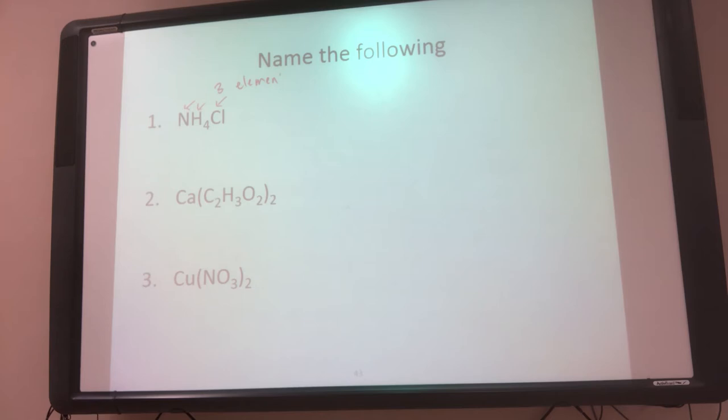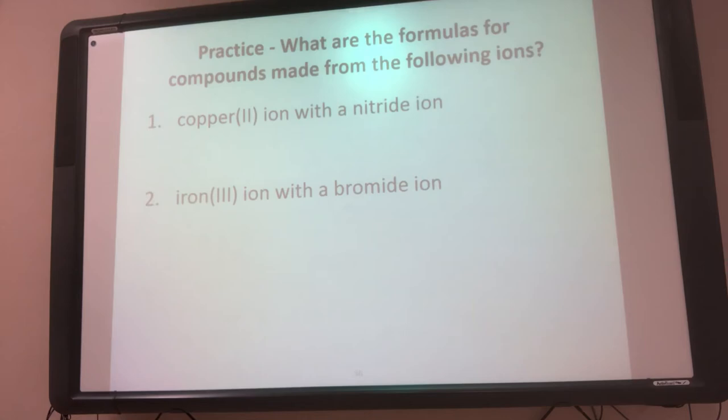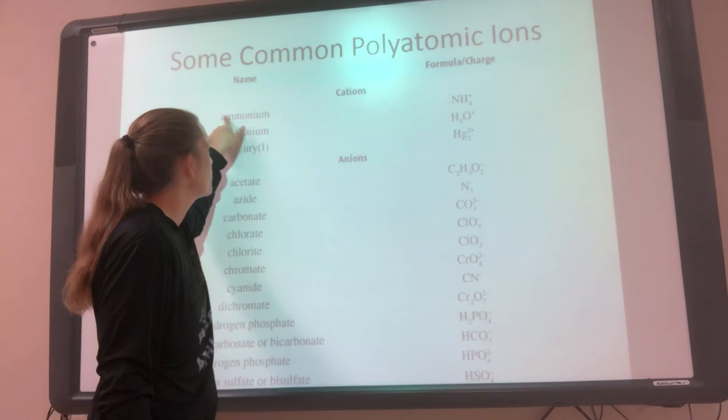But where would the polyatomic ion be? I have to figure out where H goes — H could either go with N or H could go with Cl. This is why it's important to have those polyatomic ions memorized. If I go back to the chart, NH4 is in the chart with a positive charge, and I remember its name is ammonium. The other combination, HCl as a polyatomic, is not on the chart.